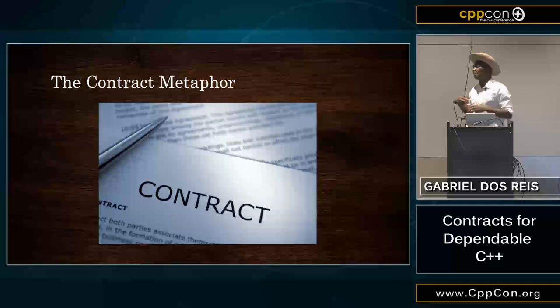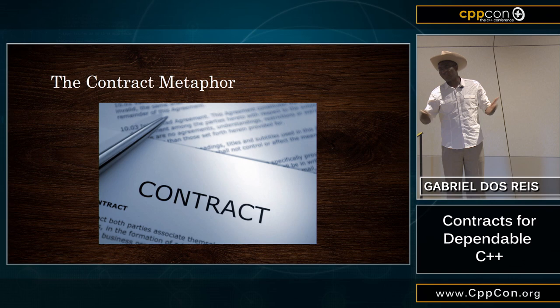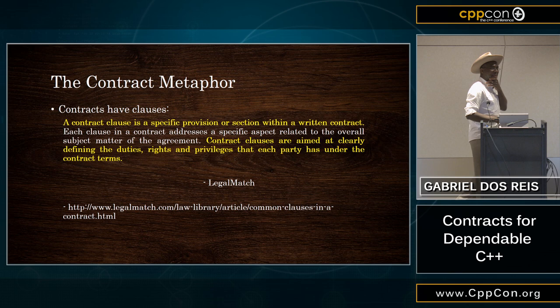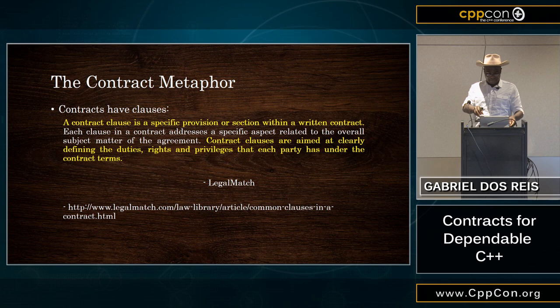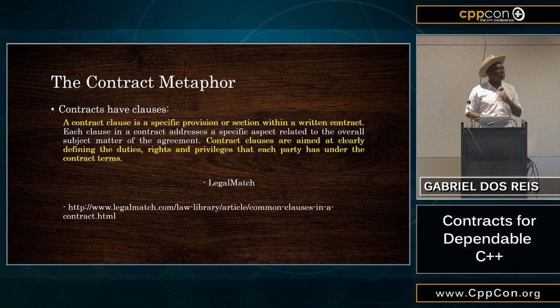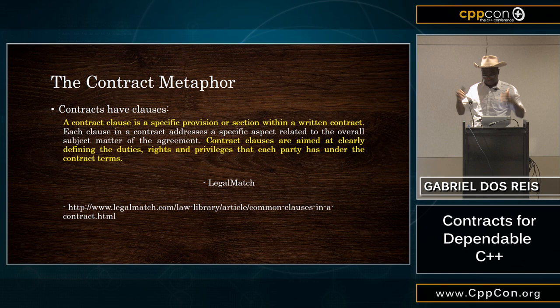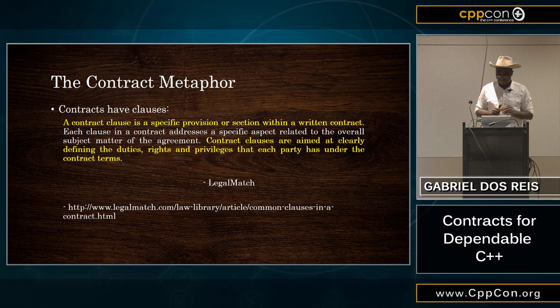So we have this contract metaphor, which usually involves two parties or more, and contracts have clauses. I went and looked at how lawyers know about contracts — that's where it comes from. A contract clause is a specific provision or section within a written contract. There is a notion that you have to write something down. Each clause in a contract addresses a specific aspect related to the subject matter of the agreement.